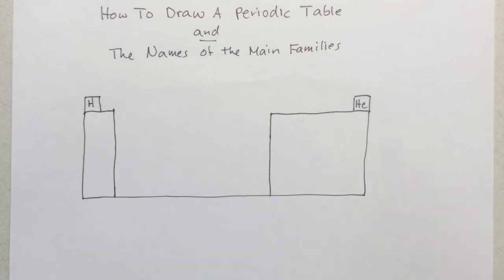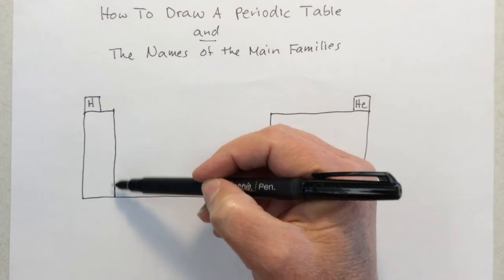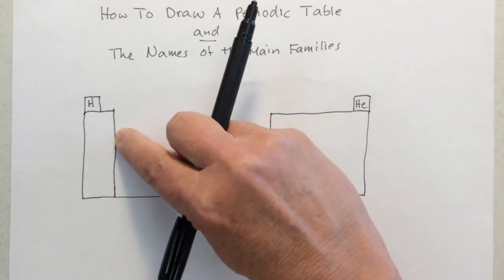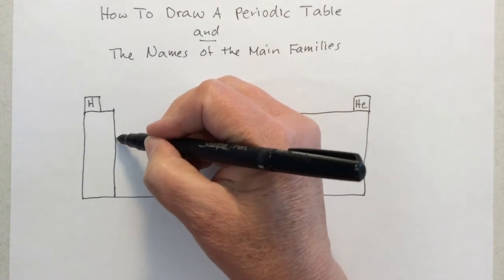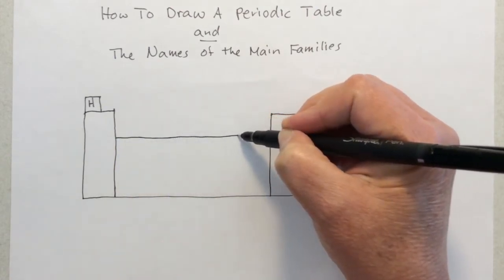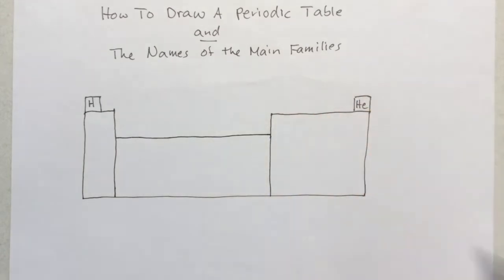We're going to keep going with our thirds motif here. Take a look at this line and mentally estimate that into thirds. Wherever the two-thirds line is, draw that across to the big box. It's like you're connecting these two boxes with a line. We're getting close.